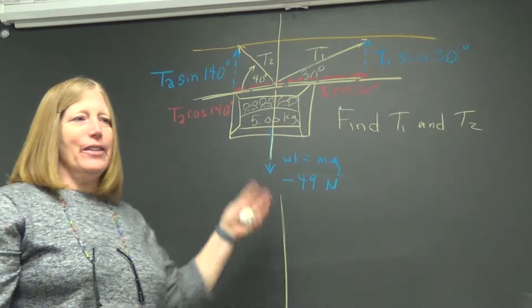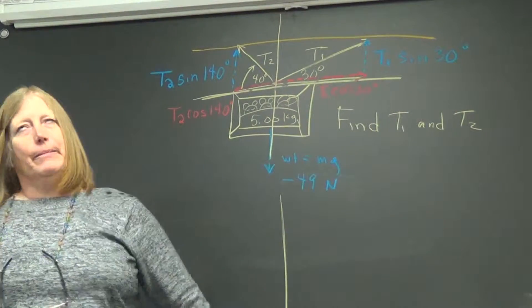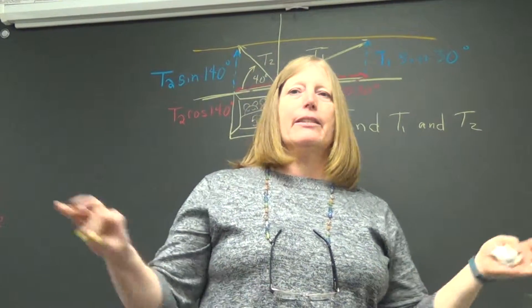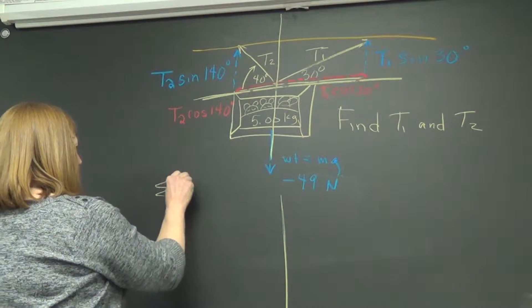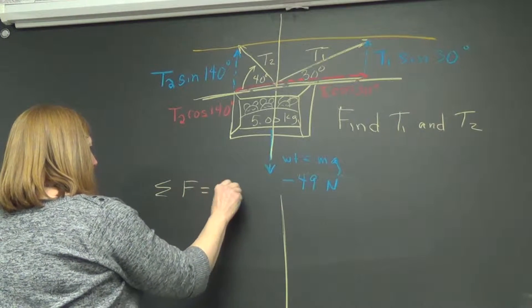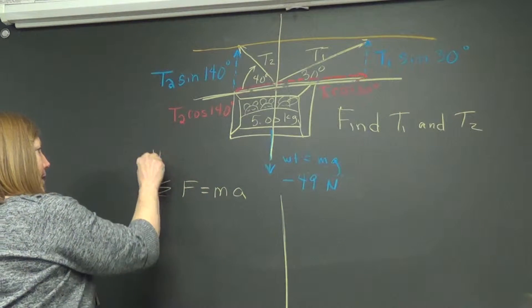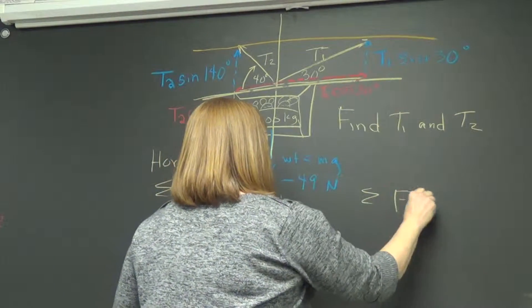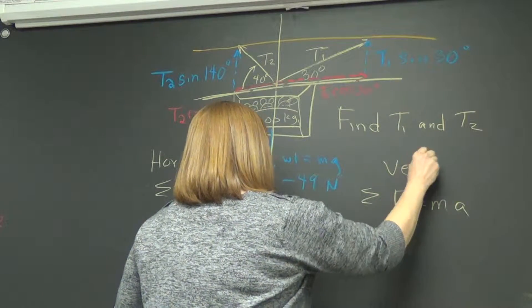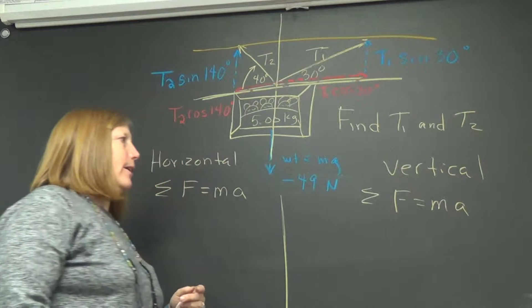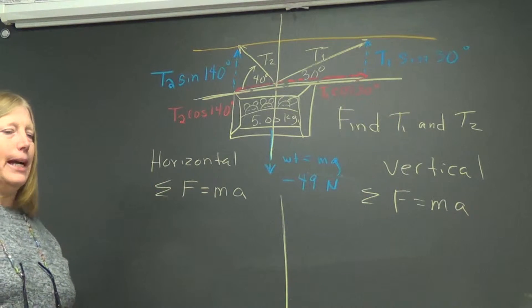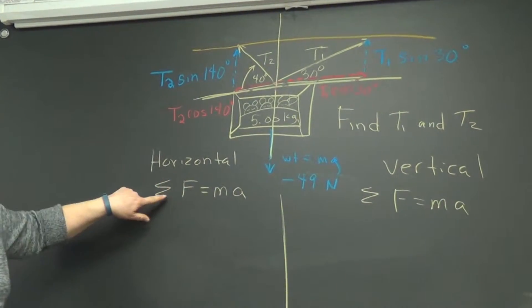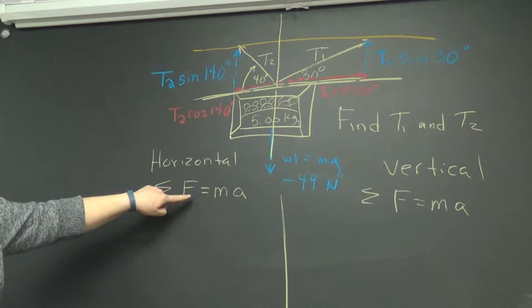We're ready to do the problem. We've got all the information down. The formula that dominates this module is sum of the forces equals ma, Newton's second law. So it's going to work for the horizontal side and it's going to work for the vertical side.